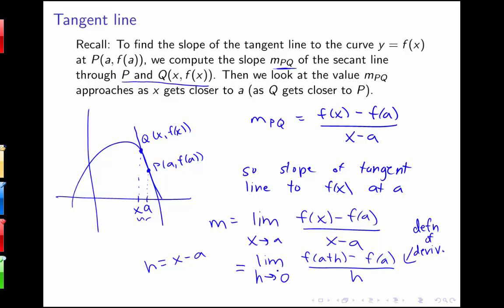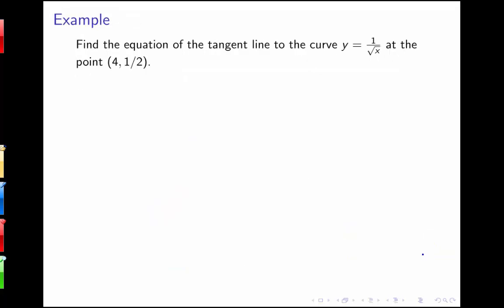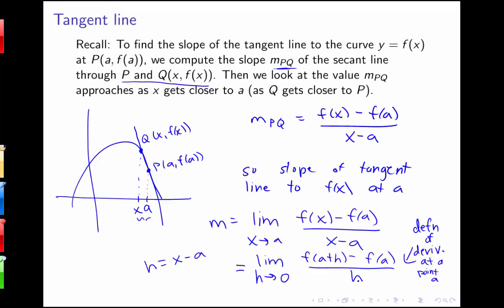What we have here is the definition of the derivative. The derivative is this kind of limit that finds the slope of a tangent line — this is the definition of the derivative at a point a. In this lecture, we're going back to the tangent line problem and the problem of instantaneous velocity, and answering questions using limits. Let's look at an example: finding the equation of the tangent line to y equals 1 over the square root of x at the point (4, 1/2). To find it, I need the slope of that tangent line.